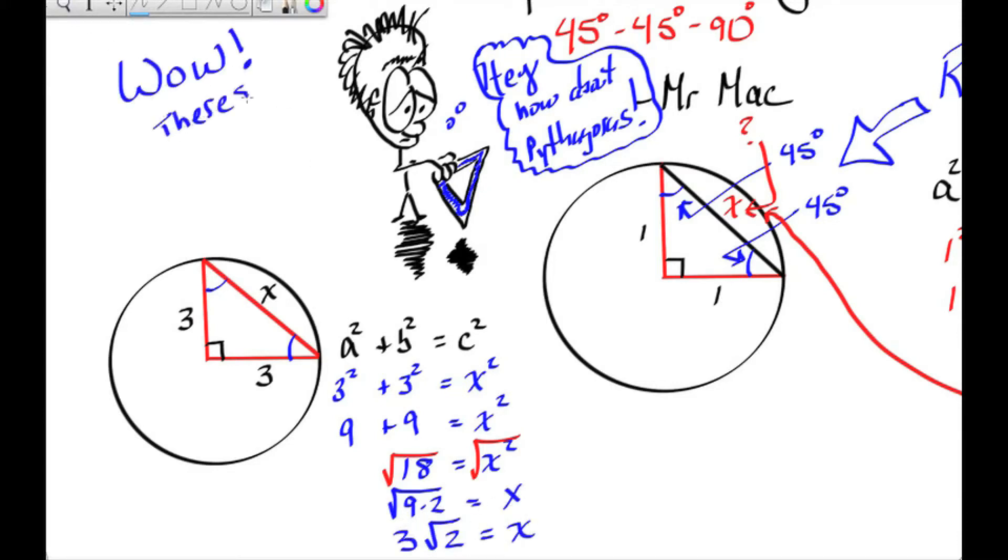Wow, you're saying, there's a pattern here, the root 2 again. So for a 45-45-90 triangle, the hypotenuse equals the leg times root 2. So let's try another example.